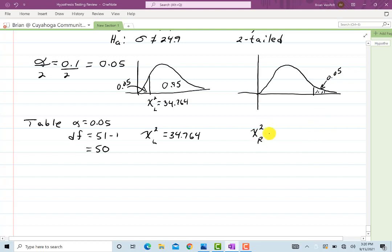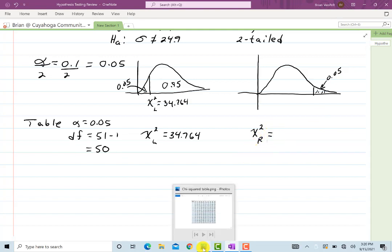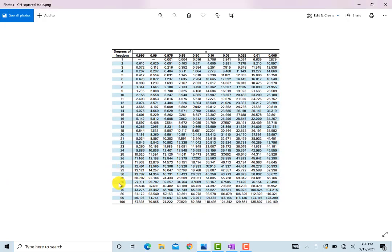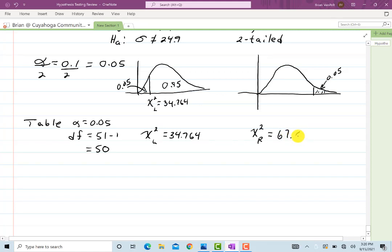Call it chi squared R. And let's see what the table tells us. So 50, and now I've got to go to the right, 0.05, 67.505. So that gave you 67.505. So basically, the picture is just like this. Put these together to form one picture, and here's your cutoff regions. I got 67.505. And the other cutoff region was 34.764. Now let's go ahead and calculate our statistic and see what we get. That's n minus 1, s squared over sigma squared.